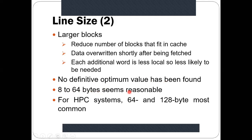For general purposes, 8 to 64 bytes line size seems reasonable. Another consideration is that line sizes of different cache levels should match — the line size of L1 should match the line size of L2. For high performance computing systems, 64 and 128 bytes are most common due to the pipelining architecture. This is the design issue of line size that cache designers must carefully consider.